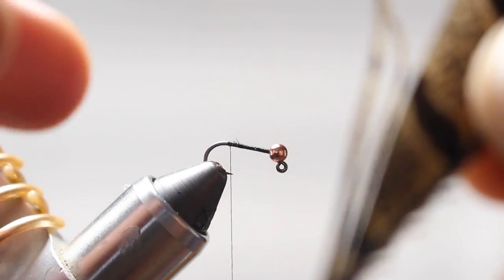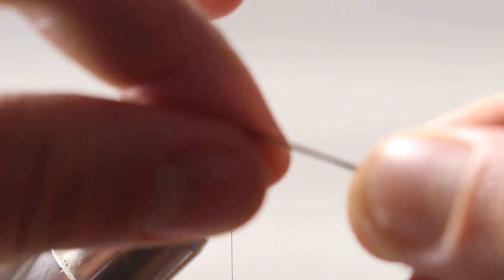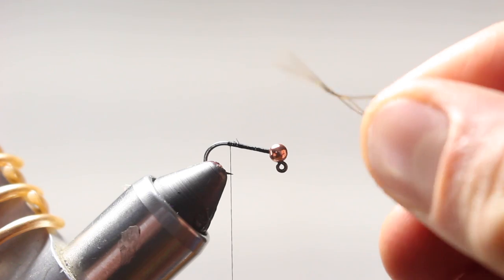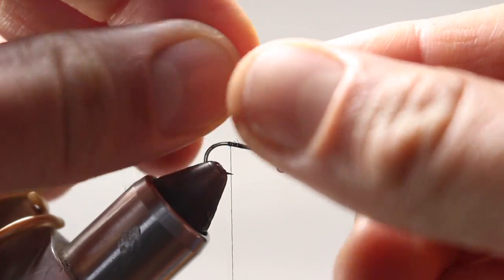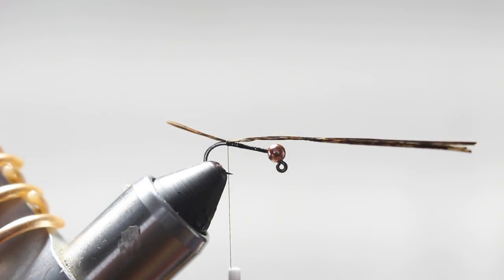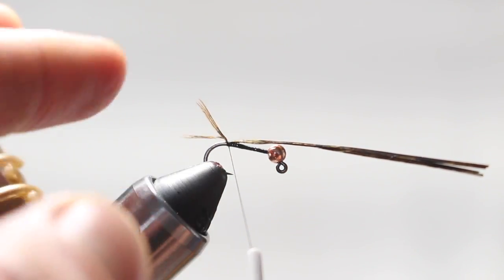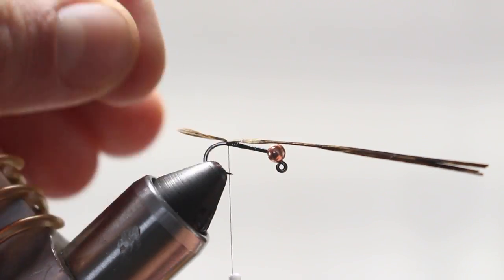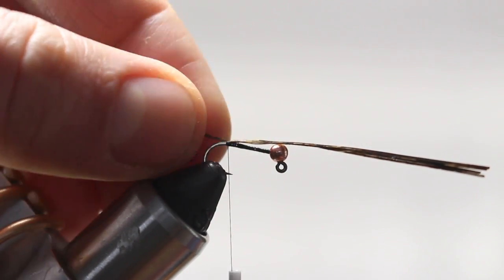Now I'm going to take probably about this many fibers, anywhere between four and six fibers off the stem. Cut them flush. All the ends are going to be pointing the same direction, so I'm just going to give it a spin with my fingers to get those points pointing a little bit different direction. I'm going to tie that in with those tips going out the back as the tail. That's a little bit of a long tail, so I'll go ahead and shorten it up just a little bit. If I just touch those a little bit, it'll kind of splay out.